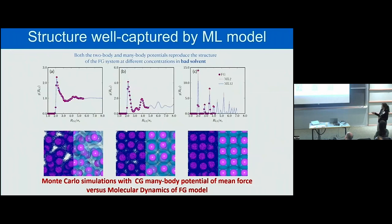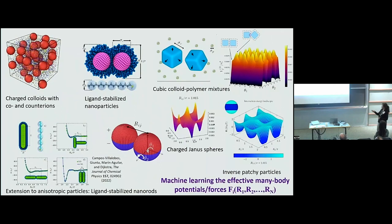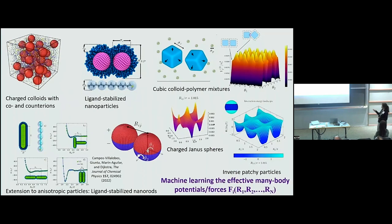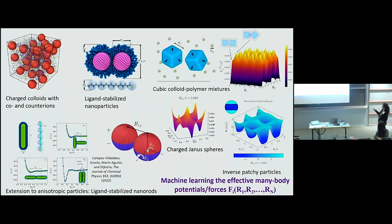We are extending this now to many other systems: charged colloids where we integrate out all the counterions, elongated particles, particles with a surface pattern giving rise to complicated potential energy surfaces — using machine learning, you can fit all those potential energy surfaces, which are extremely complicated. We can also do it for anisotropic particles where we add polymer as a depletant. Here the machine learning potential depends on all the coordinates and all the orientations of the particles, so we had to extend the fitting procedure to also account for particle orientations.